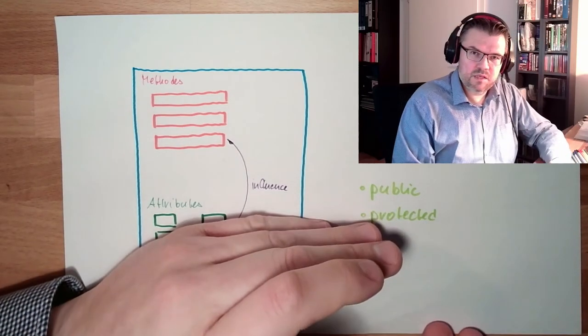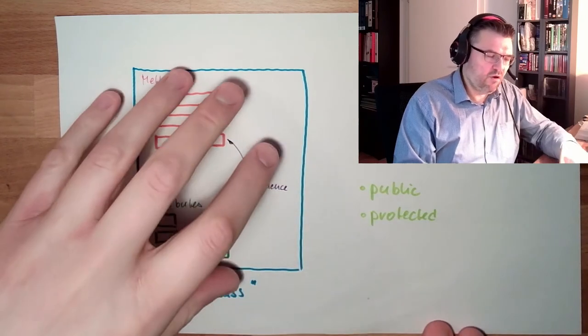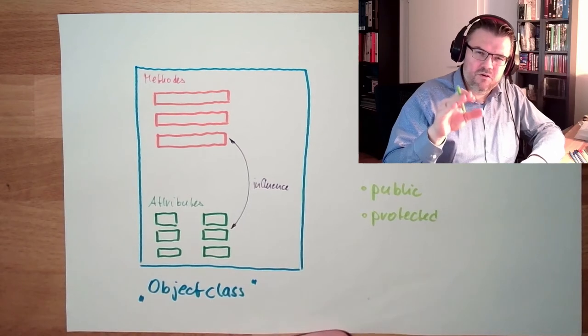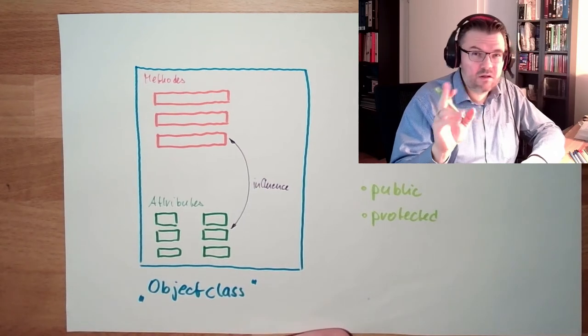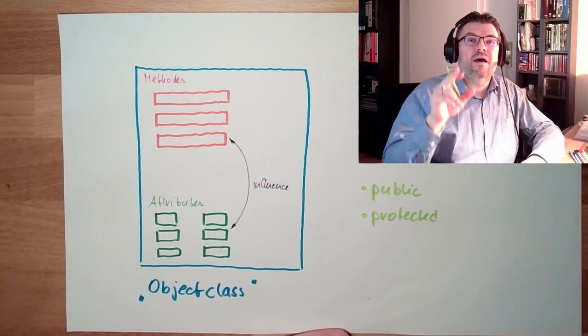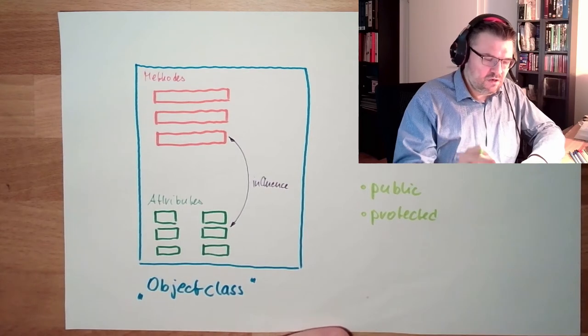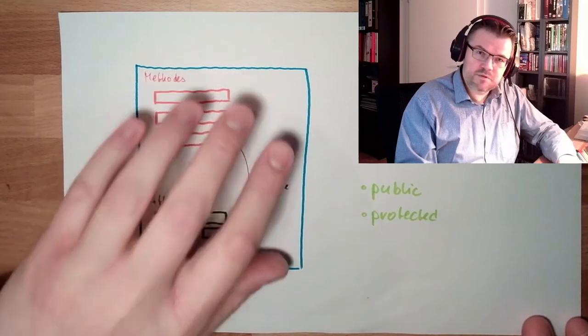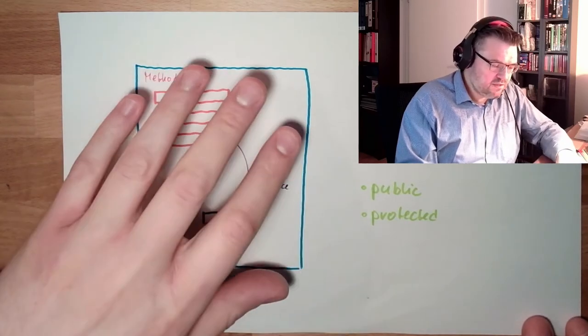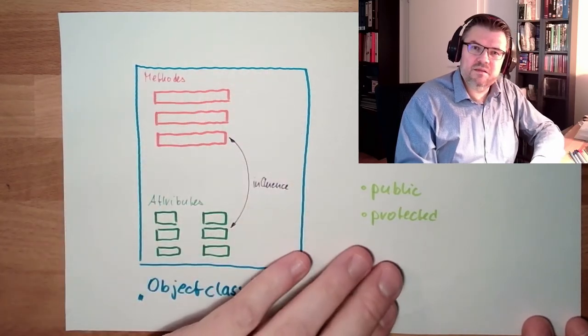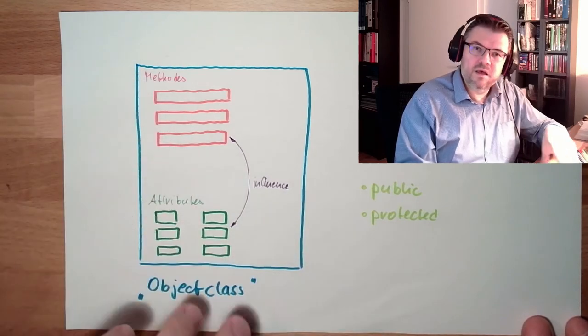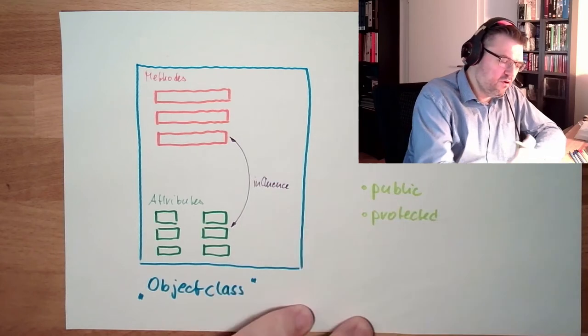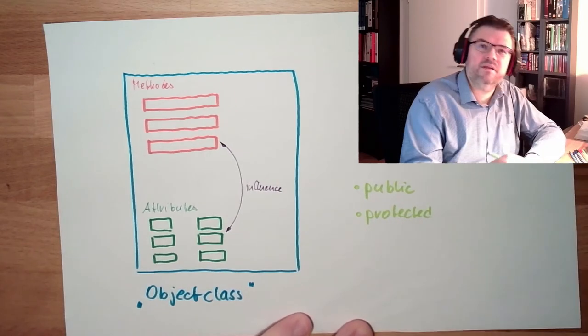Protected means the object itself can use it. Other objects or other code cannot use it, with the exception of child objects. So if there is a child object which is based on this object, a protected method attribute can be used by the child. So a derived object can use protected things.